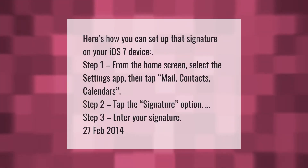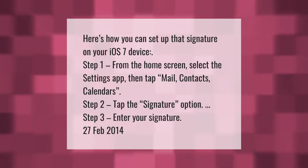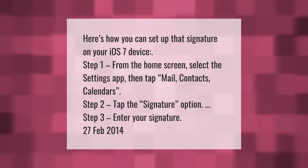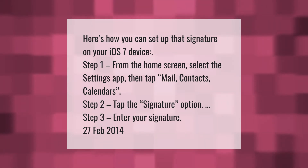Here's how you can set up a signature on your iOS 7 device. Step 1: from the home screen, select the Settings app, then tap Mail, Contacts, Calendars. Step 2: tap the Signature option. Step 3: enter your signature.